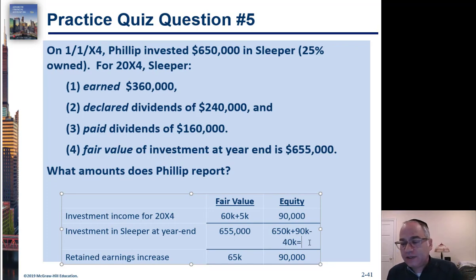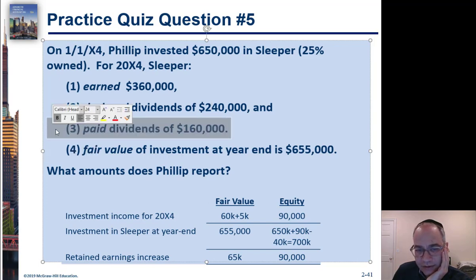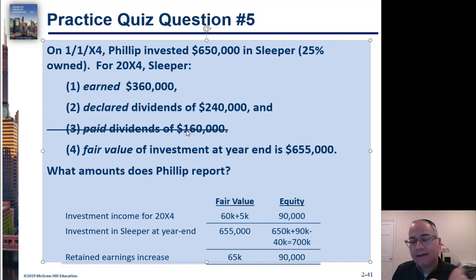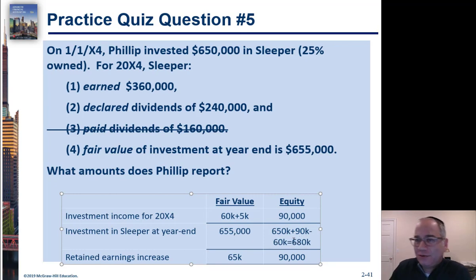Let's add that up: $650,000 plus $90,000 would be $740,000, minus $40,000 gives $700,000. Actually, there's a correction here — the paid dividends figure of $160,000 is irrelevant. It's declared dividends that matter. So $240,000 divided by 4 would be $60,000. Therefore you would subtract $60,000 and then you would get $680,000. I want to see if you're paying attention.